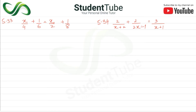We need to find the LCM of both sides. On the left side, we have denominators 4 and 6, so LCM is 12. So 6 goes into 12 twice giving 2x, and 4 goes into 12 three times giving 3x.